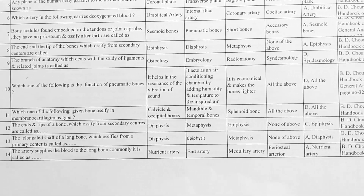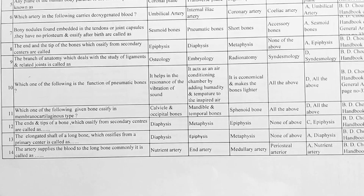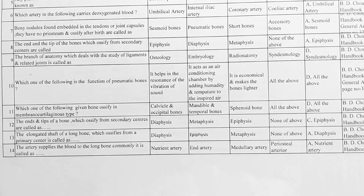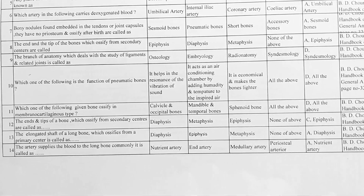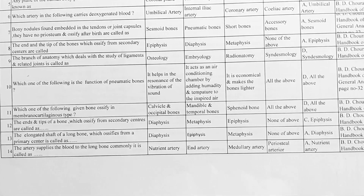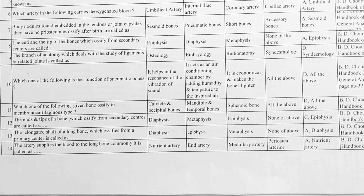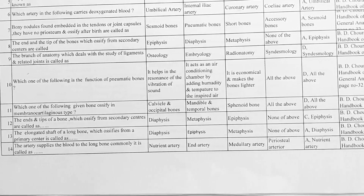Next, the elongated shaft of a long bone which ossifies from a primary center is called — options: A. diaphysis, B. epiphysis, C. metaphysis, D. none of the above. Correct answer is A, diaphysis.